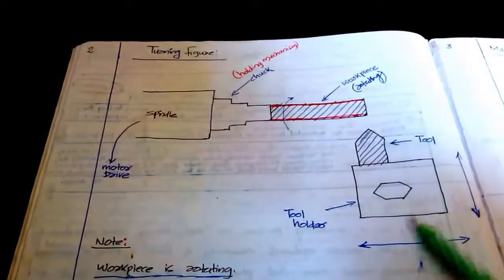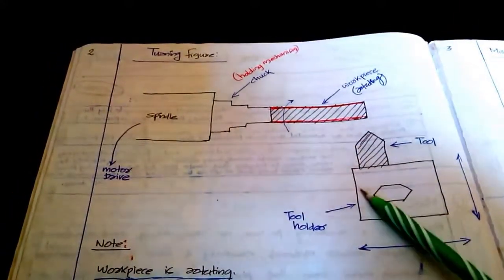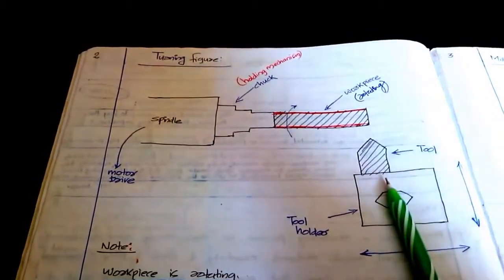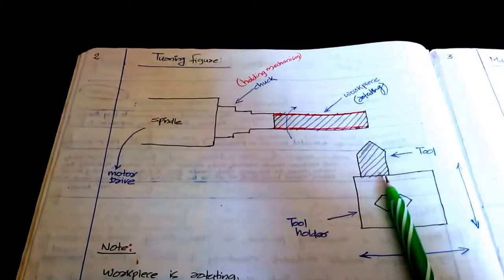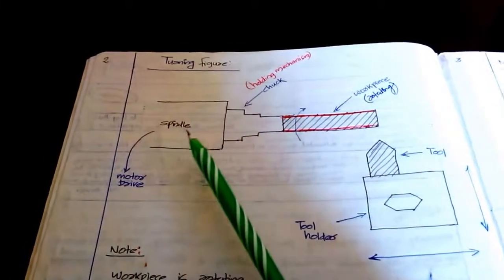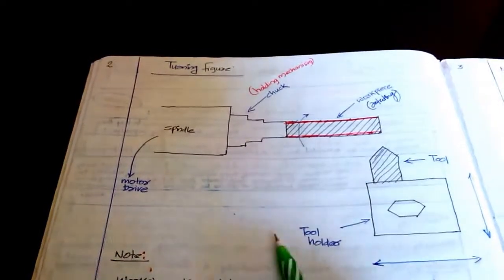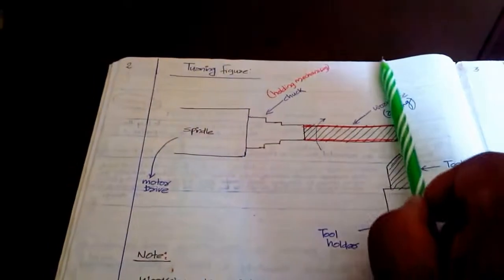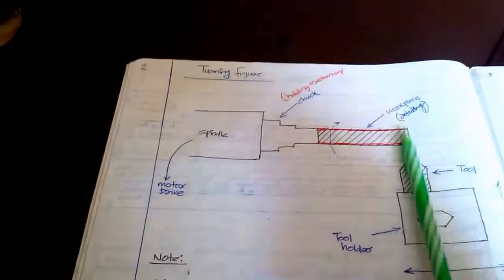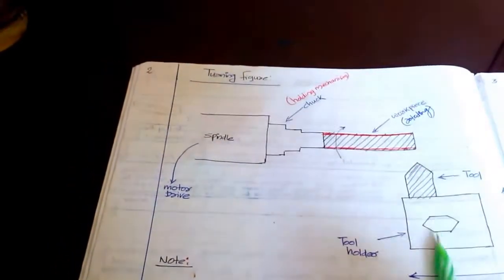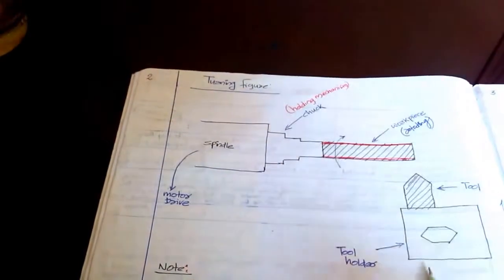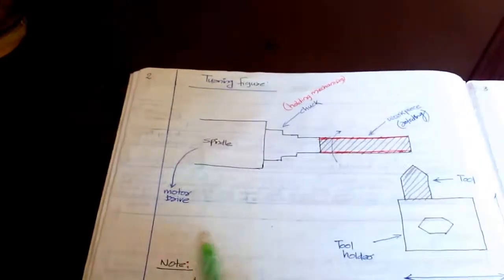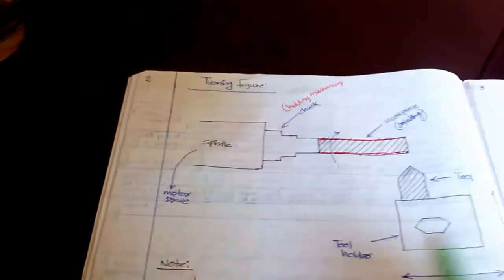This is the tool holder. On the tool holder, tool is placed. So this tool has two movements in the case of turning: X movement and Z movement. If the tool moves in this direction, forward and backward, this is the X movement. If the tool is moving in this direction, this is the Z movement.